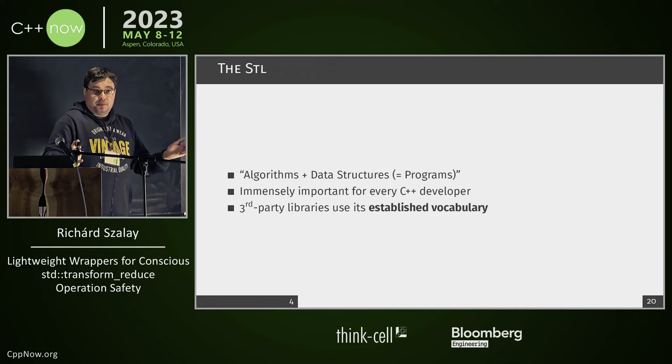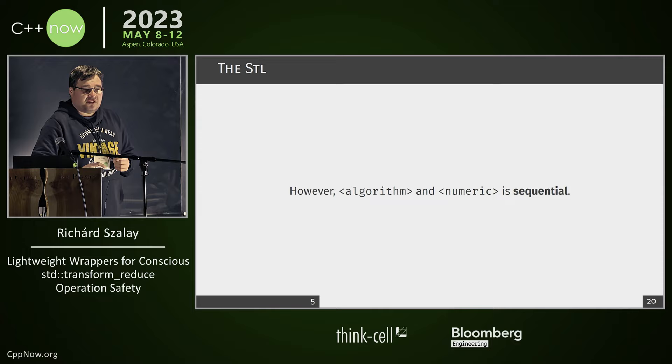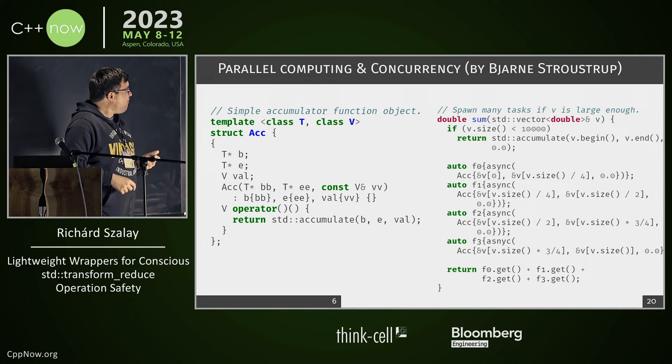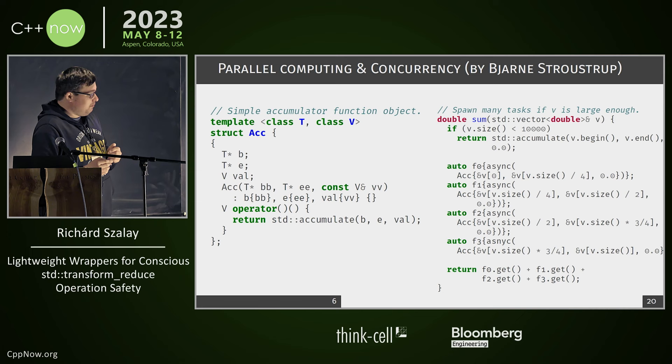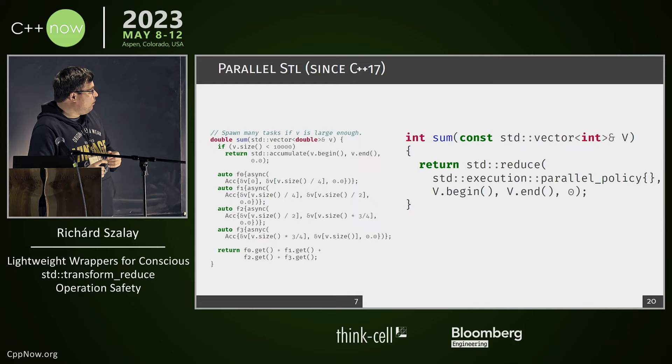But the problem is that for a long time all these very nice algorithms were sequential. So what did we do? We came up with ways to use all the nice computing power that we've got over the decades — sometimes in a very ugly way — but then clever people came up with more nice looking versions for roughly the same thing.